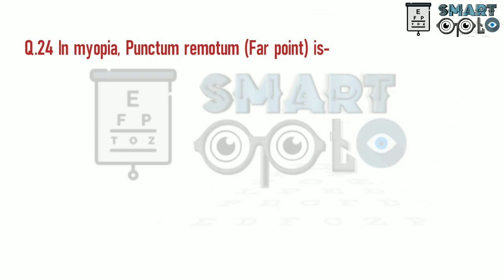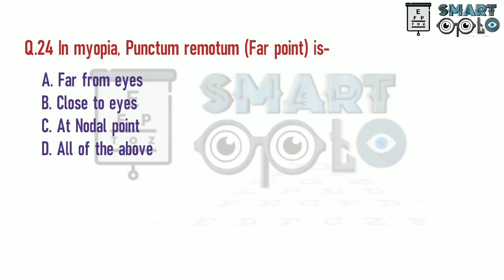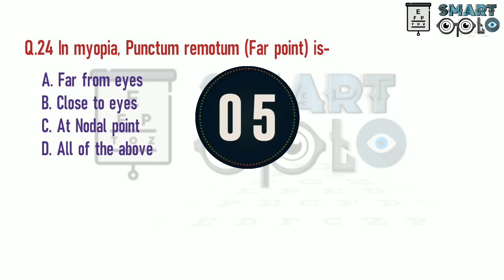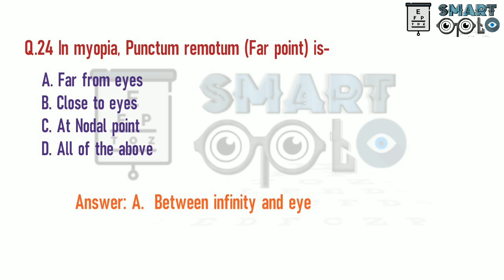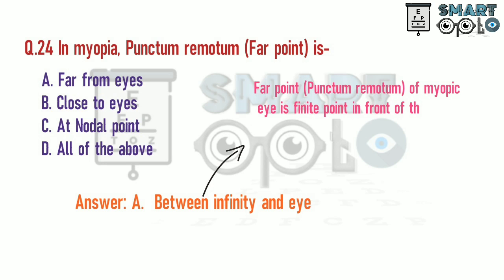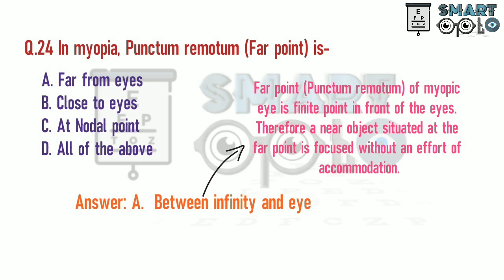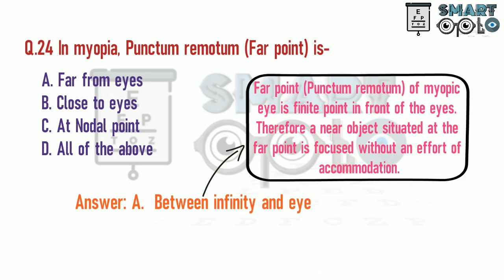Q24. In myopia, the punctum remotum, i.e., far point, is: A. Far from the eyes. B. Close to the eyes. C. At the nodal point. D. All of the above. The far point (punctum remotum) of a myopic eye is a finite point in front of the eyes. Therefore, a near object situated at the far point is focused without any effort of accommodation.